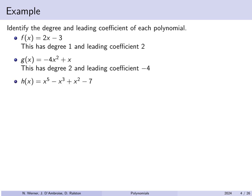For h(x) = x⁵ − x³ + x² − 7, the highest power is x⁵, so the degree is 5. There is implicitly a 1 multiplying x⁵, so the leading coefficient is 1.